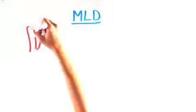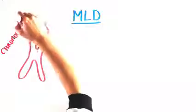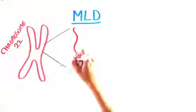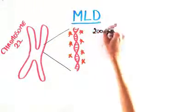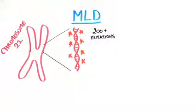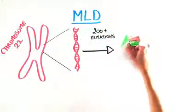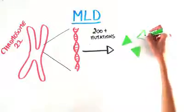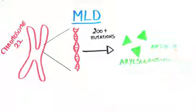Let's delve into the biology behind MLD. It is caused by a mutation, or a change in the DNA sequence, on chromosome 22. There are over 200 different mutations that can cause MLD. The gene mutated is responsible for making an enzyme called arylsulfatase A, abbreviated ARSA-A.